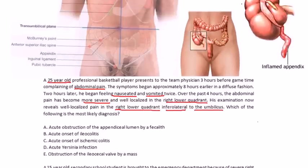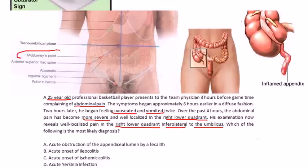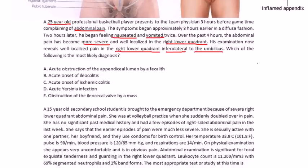Well, inferolateral to umbilicus, they're talking about McBurney's point. Here's the umbilicus, inferior and lateral. So I just wanted to mention that. They won't mention, say, McBurney's point. They just kind of talk about it in a way that you have to figure it out. Well, this is obviously appendicitis, but which one of these?